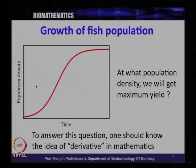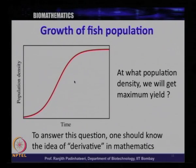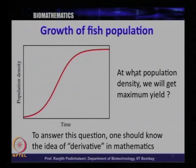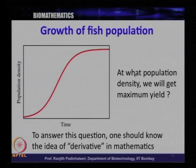As we start growing fish, at the early stage you have very little population. By population density we mean how many fish per unit area or unit volume. At early time you have very small population density, then population density increases, and as time goes it reaches a maximal value and kind of saturates. This is a typical growth curve applicable for bacterial colony, yeast cell division, and so on.